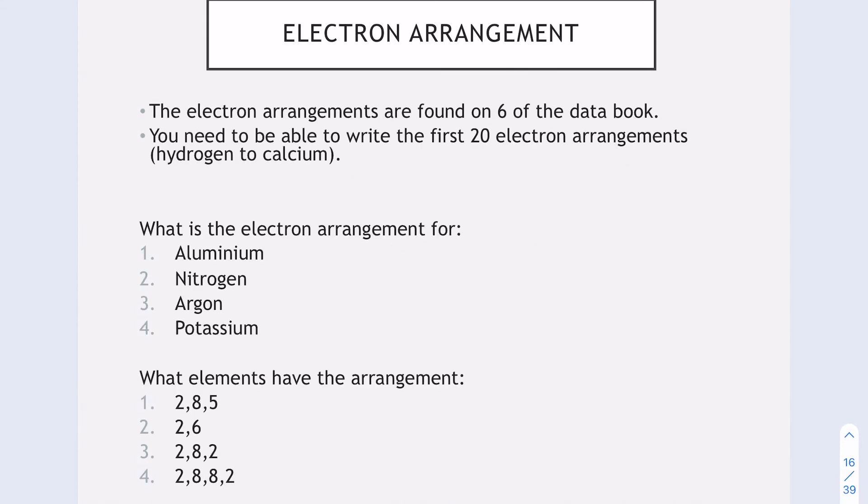Here we have some examples. What is the electron arrangement for aluminum? I would go to my data book on page six and find aluminum, which has an electron arrangement of 2, 8, 3. Then we've got what elements have this arrangement. Just add them up to get the atomic number. If we look at the first one, that is 15. Go to your data book and you will see that's phosphorus, the element with 15 electrons. Feel free to try some of the ones yourself.